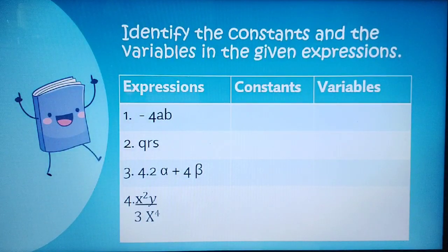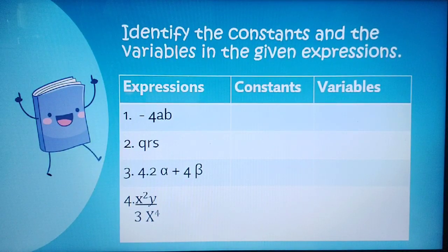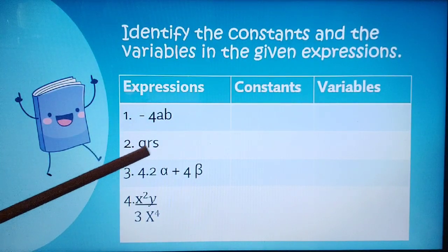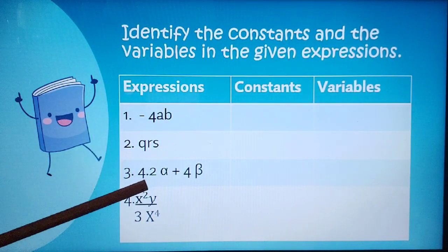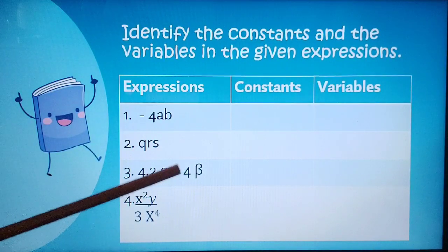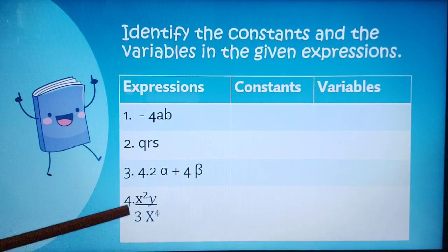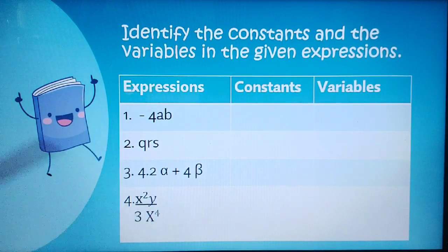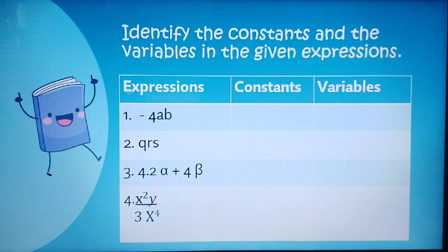So let's have this one. Let's identify the constants and the variables in each given expression. We have the expression negative 4AB, we have QRS, we have 4.2 Alpha plus 5 Beta, and we have the number 4 X squared Y divided by 3X to the fourth power.